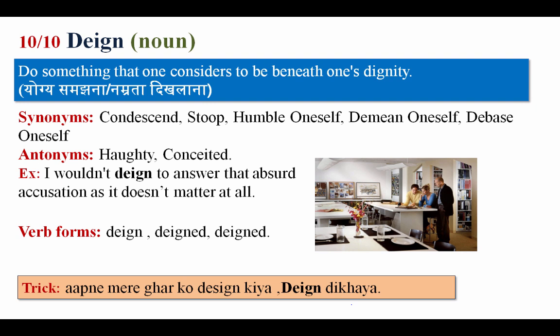The last word is deign, meaning to do something that one considers beneath one's dignity — yogya samajhna, narmrata dikhana, to humbly respond or act. Synonyms: condescend, stoop, humble oneself, demean oneself, debase oneself. Antonyms: haughty, conceited. Example: I wouldn't deign to answer that absurd accusation as it doesn't matter at all. Word forms: deign, deigned, deigning.